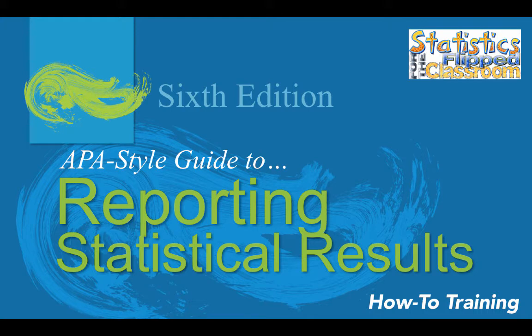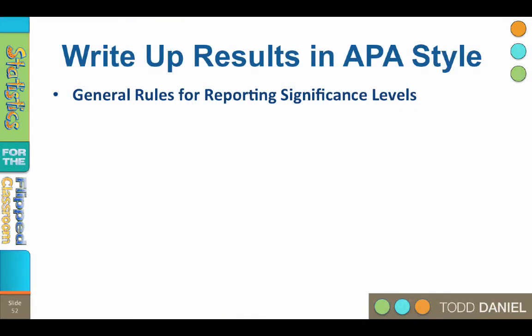After conducting a statistical analysis, you should write up the results in proper APA 6th edition style. Here's what you need to know. This example applies to writing up results in APA style using output from SPSS.